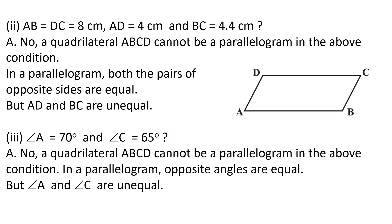Part number two: AB equals DC equals 8 cm, AD equals 4 cm, BC equals 4.4 cm. The answer is no — quadrilateral ABCD cannot be a parallelogram under this condition. In a parallelogram, both pairs of opposite sides must be equal. Here AB and DC are equal, but AD and BC are unequal (4 cm vs 4.4 cm), so it cannot be a parallelogram.